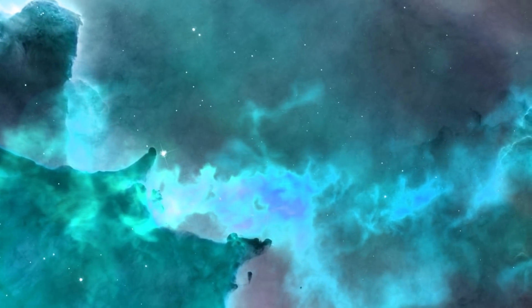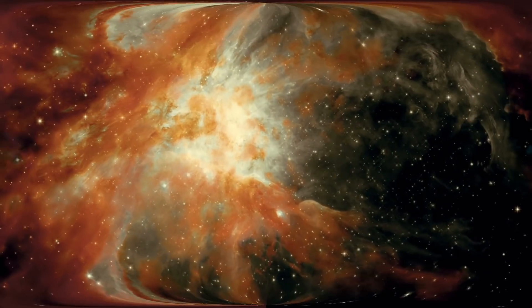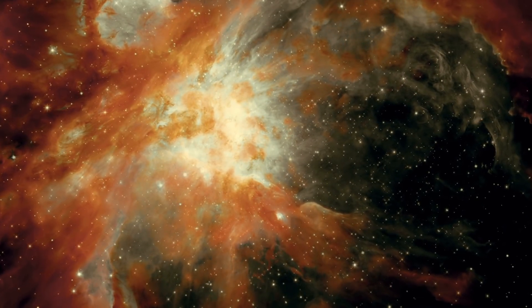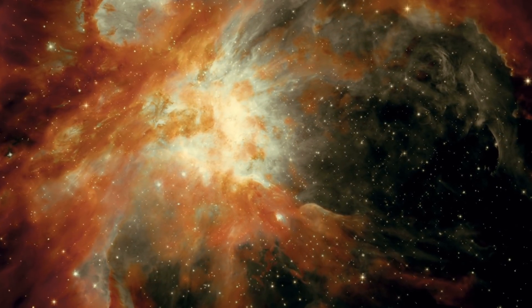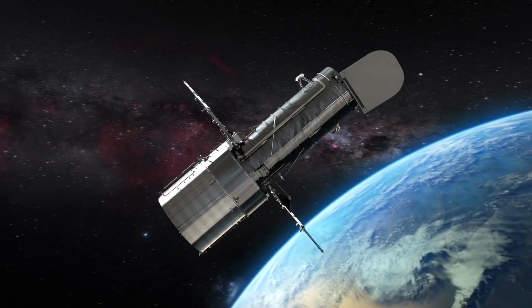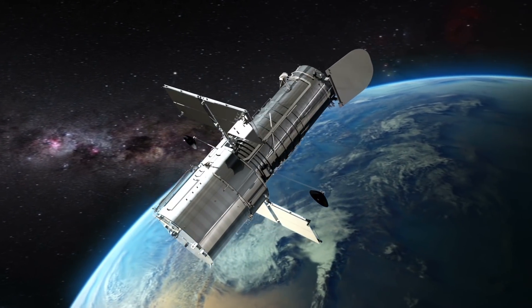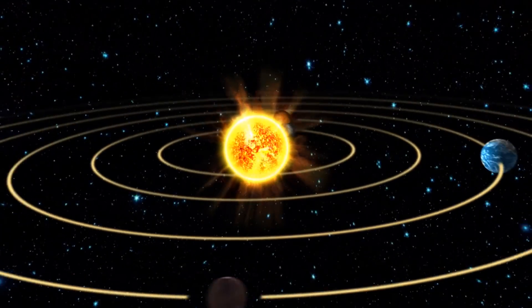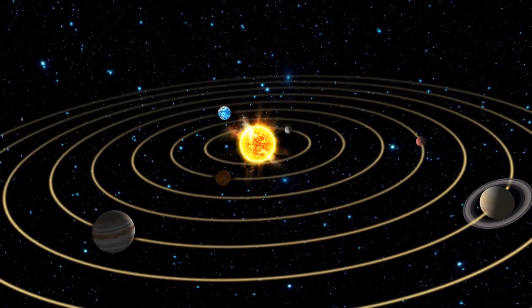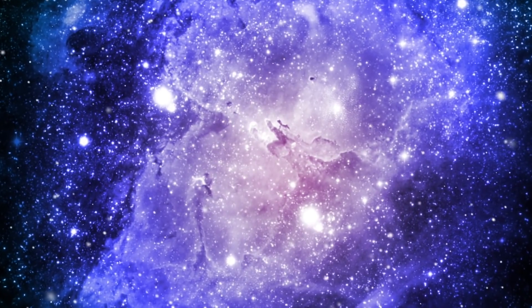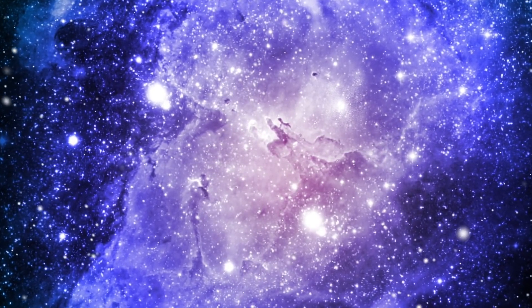And let's not forget that the universe is much bigger than we see. What we know of the universe right now is called the observable universe. The observable universe is a spherical region of the universe comprising all matter that can be observed from Earth or its space-based telescopes and exploratory probes at the present time. Because electromagnetic radiation from these objects has had time to reach the solar system and Earth since the beginning of the cosmological expansion.